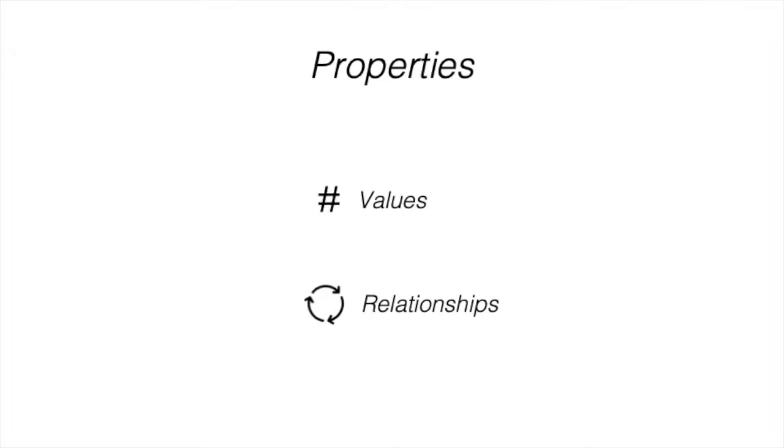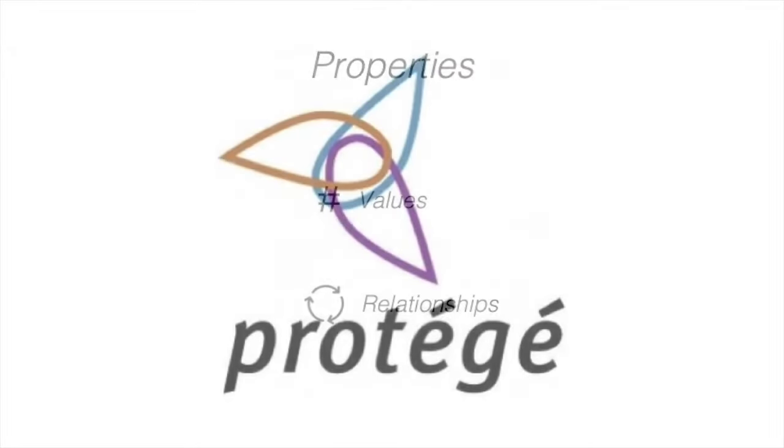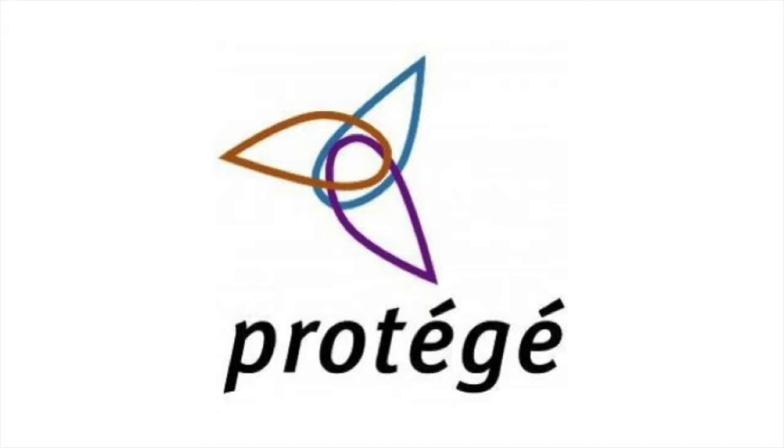With these two ingredients, classes and properties, we're ready to start building an ontology. We'll be using Protege to build an ontology of universities. I know I've been using chairs a lot, but chairs get boring pretty easily. So let's do something much more fun. School.